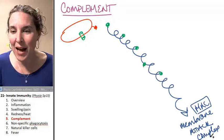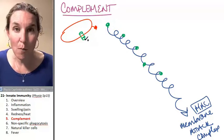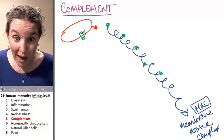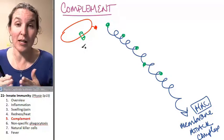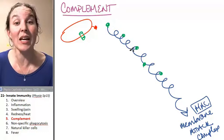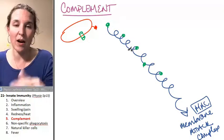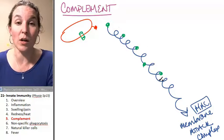The MAC attack complex pops the bad guy. The MAC membrane attack complex basically pokes a hole in the invading cell and then the hole allows stuff to go in and out and the cell can no longer survive.